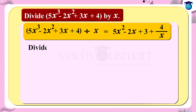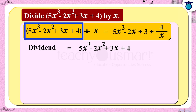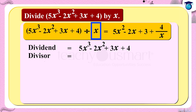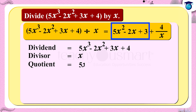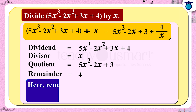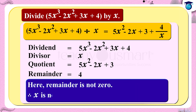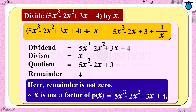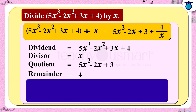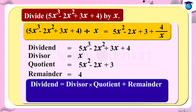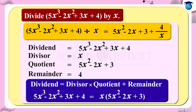Hence, the dividend is 5x³ - 2x² + 3x + 4, the divisor is x, the quotient is 5x² - 2x + 3, and the remainder is 4. Since the remainder is not 0, x is not a factor of p(x) = 5x³ - 2x² + 3x + 4. By the division rule — dividend = divisor × quotient + remainder — we can write: 5x³ - 2x² + 3x + 4 = x·(5x² - 2x + 3) + 4.